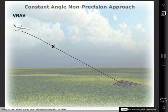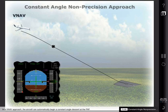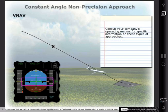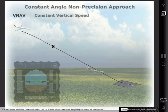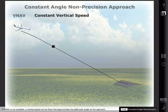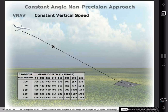Flying a constant angle descent can be accomplished in several ways. Many modern aircraft are equipped with vertical navigation, or VNAV. In a VNAV approach, the aircraft can automatically begin a constant angle descent at the final approach fix. While there are some differences, a VNAV approach is not unlike an ILS — in both cases, the aircraft captures and follows a glide path to a decision altitude where the decision is made to land or execute a missed approach. If VNAV is not available, a vertical speed can be flown that approximates the glide path angle for the approach. Some approach charts and publications contain a chart of vertical speeds that will produce a specific glide path based on ground speed. If no vertical speeds are published, formulas can be used to deduce when to start the descent as well as what vertical speed to use.